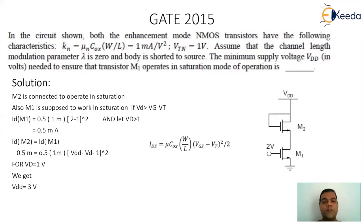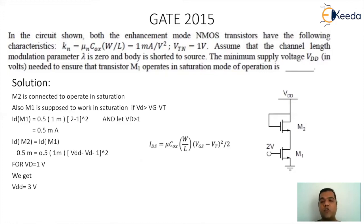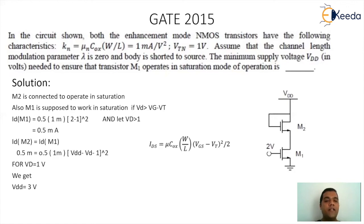MOSFET 2 drain current = 0.5 mA. Substituting into the formula: 0.5mA = 0.5 × 1mA × (VGS2 − 1)², where VGS2 = VDD − VD1 and VD1 = 1V (minimum condition). So: 0.5mA = 0.5 × 1mA × (VDD − 1 − 1)². Solving this gives VDD = 3V. Therefore, the minimum supply voltage VDD needed is 3V.